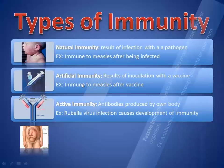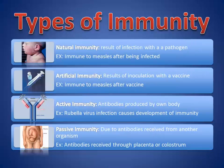Active immunity can be the result of either natural or artificial immunity. Passive immunity is a special case where antibodies are actually received from another organism — not produced by your own white blood cells. The most obvious example is a fetus receiving antibodies from the mother through the placenta, or after birth through breast milk, which is called colostrum.